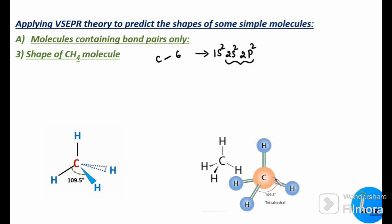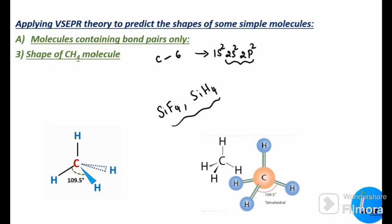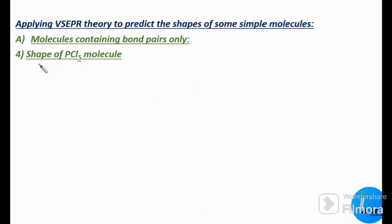The carbon atom sits at the center of a regular tetrahedron with four hydrogen atoms at its four vertices. According to VSEPR theory, electronic repulsion between bond pairs is minimum when they are as far apart as possible, giving the tetrahedral arrangement. Other examples with this regular tetrahedral structure include silicon tetrafluoride (SiF₄) and SiH₄.